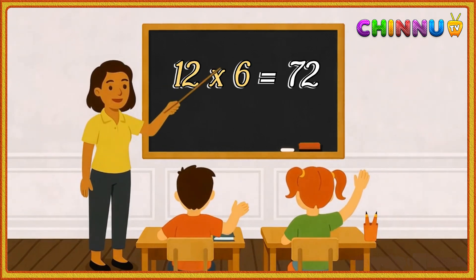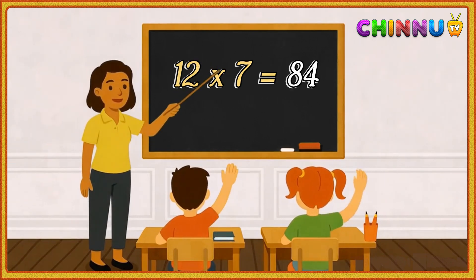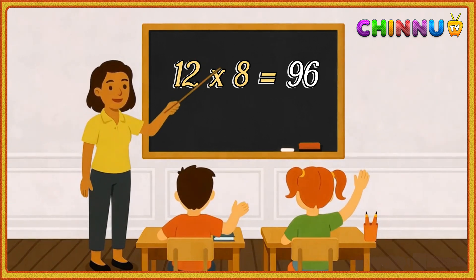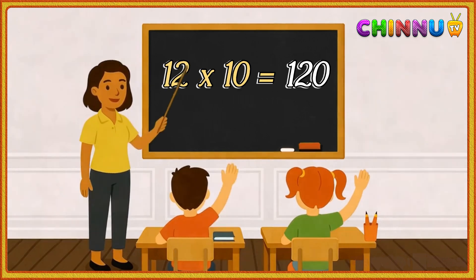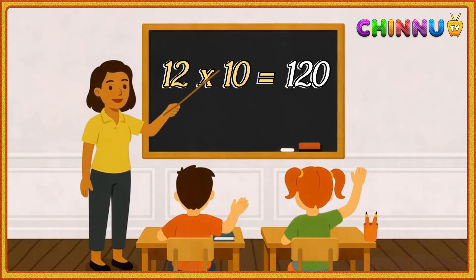12 6s are 72, 12 7s are 84, 12 8s are 96, 12 9s are 108, 12 10s are 120.